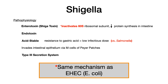Shigella also has an endotoxin. It's acid stable, which is really important for conveying infection — due to its acid stability it's relatively resistant to gastric acid, meaning a low infectious dose is required. Contrast that with Salmonella, which is acid labile and not resistant to gastric acid, so Salmonella requires a high infectious dose. In Shigella, gastric acid won't break it down, so a smaller infectious dose can cause infection. That's another key differentiating feature between Salmonella and Shigella.